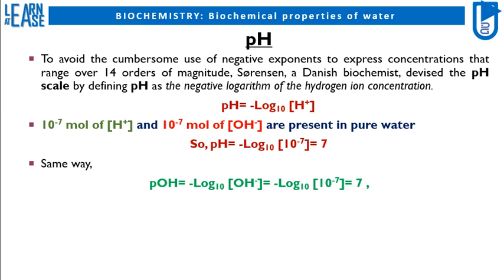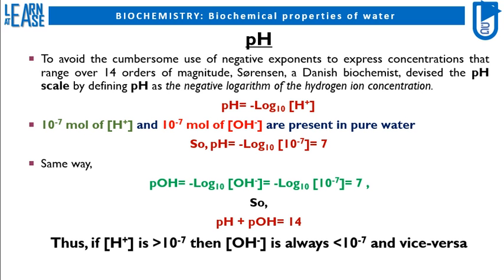Similarly, pOH = −log₁₀[OH⁻] = −log₁₀(10⁻⁷) = 7. Therefore, pH plus pOH equals 14. Thus, if H plus ion concentration is greater than 10 raised to minus 7 moles, then the concentration of OH minus ions is always less than 10 raised to minus 7 moles, and vice versa.